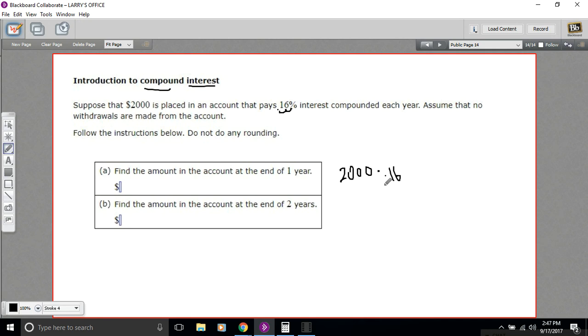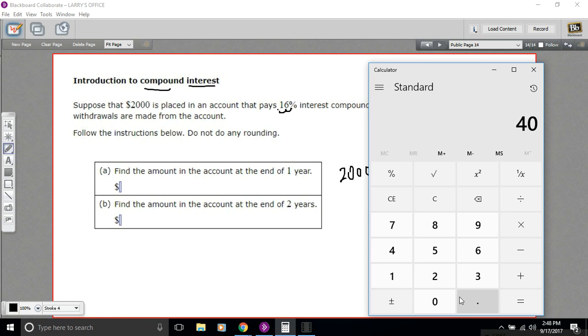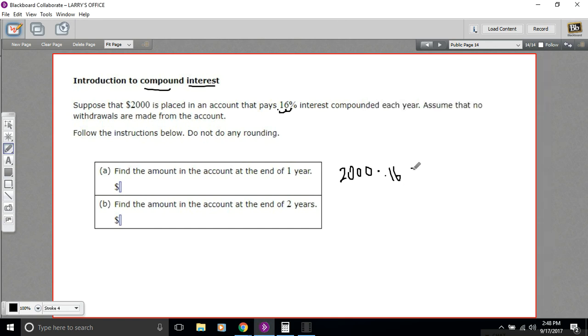So let's bring up a calculator and try that out. So $2000 times 0.16 - that is $320. Not bad! So that's the amount that gets added. So the amount in your account is $2320.